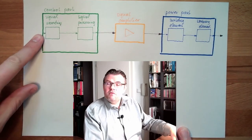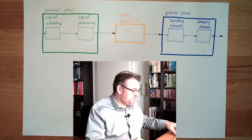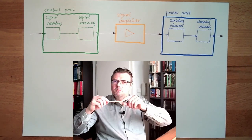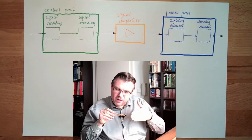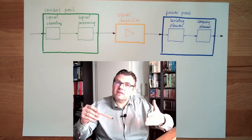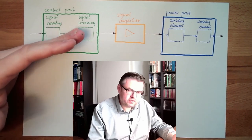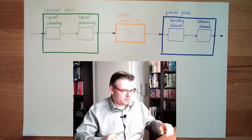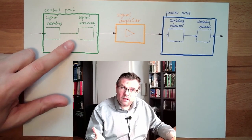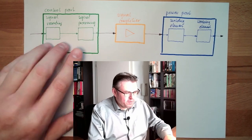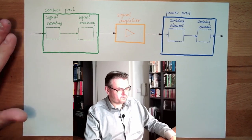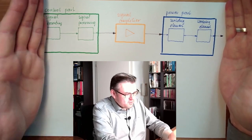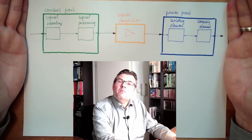Signal recording can be mechanical, by the use of levers, or pneumatic, by the use of nozzles which may be open or closed depending on whether an item is present. Signal processing can also be mechanical, with levers and gears, or pneumatic, with the use of valves. This is the typical structure of a control system.